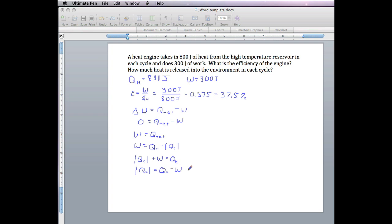Now we're ready to plug in our numbers. QH was 800 joules. Then we subtract W, which was 300 joules. That gives us 500 joules.